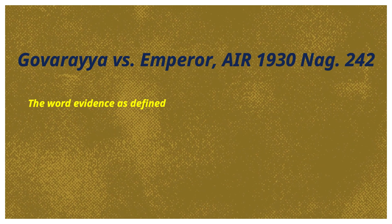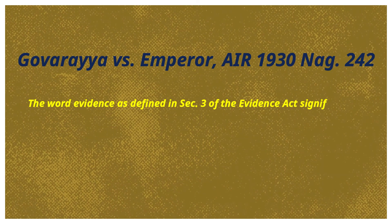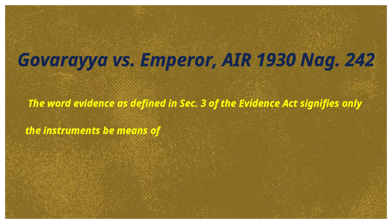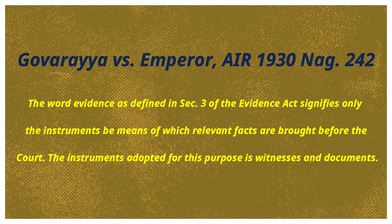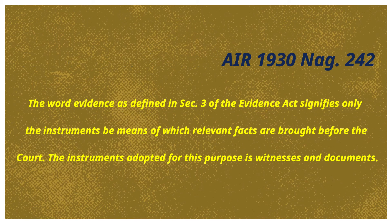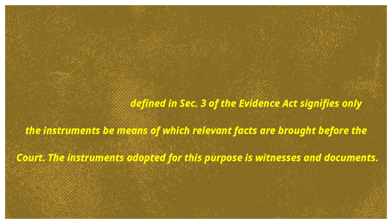In Goveria v. Emperor, A.I.R. 1930 Nag. 242, it was held that the word 'evidence' as defined in Section 3 of the Evidence Act signifies only the instruments by means of which relevant facts are brought before the court. The instruments adopted for this purpose are witnesses and documents.